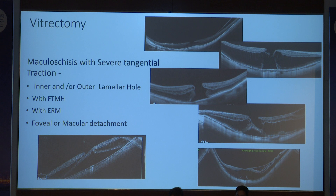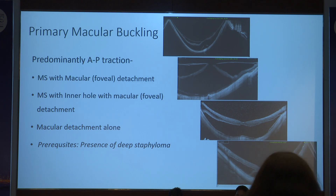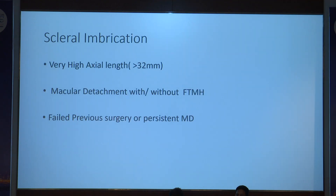Vitrectomy is considered when there is maculoschisis with severe tangential traction. Macular buckle is planned when there is predominantly anteroposterior traction and a generally large staphyloma. Combination of buckle with vitrectomy is used when both anteroposterior and tangential traction are present. Indications for vitrectomy also include macular detachment with full-thickness hole, failed previous surgery with foveal schisis. Scleral buckling is rarely done now, mainly where axial length is very high, macular detachment with or without full-thickness macular hole, and particularly failed surgery.